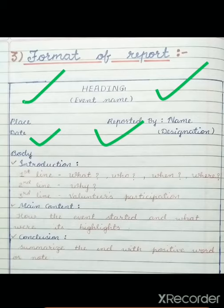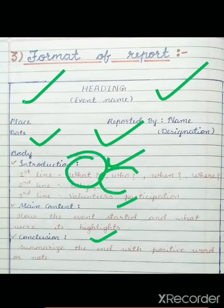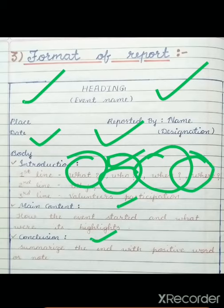Next comes the body, which has three main points: introduction, main content, and conclusion. In the introduction, in the first line, you have to write what the event is about, who is there in the event, when it took place, and where it took place. Remember, this is very important — these four W's must be present in your first line of introduction.